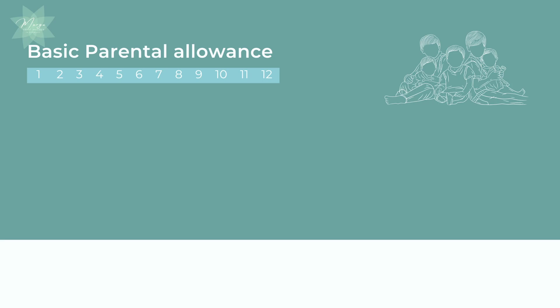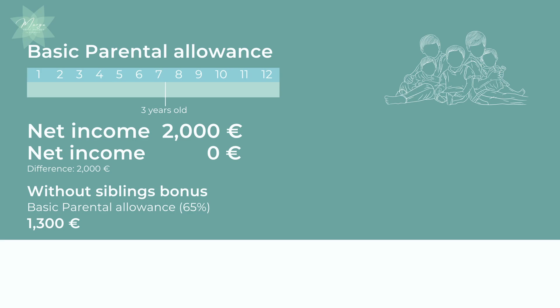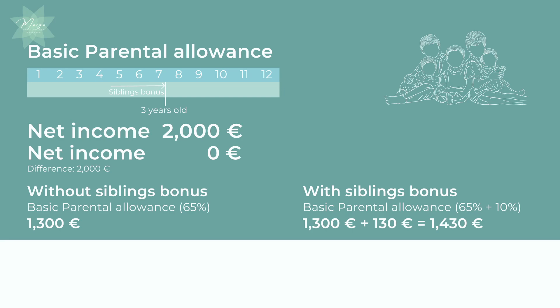Here is an example of basic parental allowance with siblings bonus. The mother receives basic parental allowance during the first 12 months of the child's life. The child for whom she receives the parental allowance has an older sister who turns three when the younger child is seven months old. The net income before the child's birth was 2,000 euros and after it is zero. For basic parental allowance — 65% of the difference — without the siblings bonus it would be 1,300 euros, but with the 10% siblings bonus it will be 1,430 euros. So the mother's basic parental allowance is 1,430 euros in the first seven months and 1,300 euros in months 8 through 12.